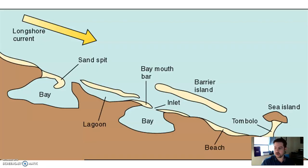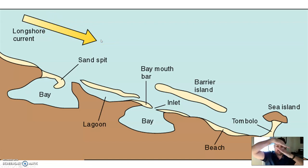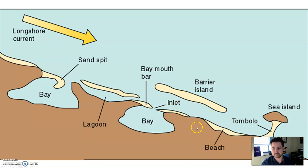Because of longshore currents, you get different depositional landforms such as sand spits, baymouth bars, barrier islands, and tombolos, just to name a few. The longshore current is always going to be parallel to the shore, so a lot of these depositional features are oriented lengthwise parallel to the shore — though not all.